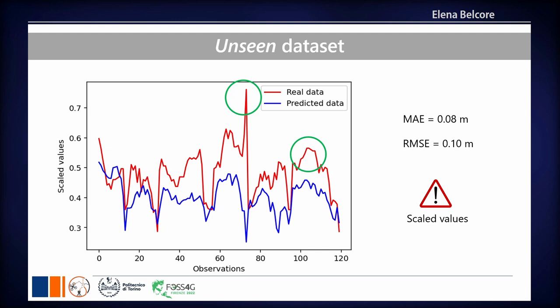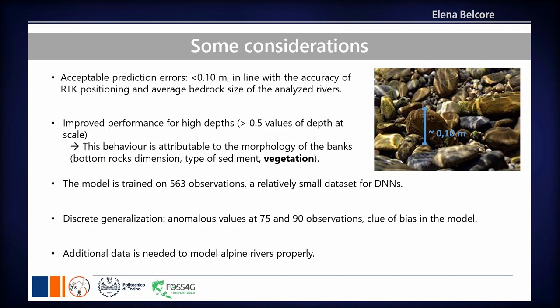On the unseen dataset we have an RMSE of 10 centimeters and a mean absolute error of 8 centimeters. These values are acceptable for this type of water body: they are in line with RTK measurements that have accuracy and precision around 3 centimeters, and also because of the nature of the alpine environment we are surveying. Most patterns in the river bottom are on the order of centimeters, so obtaining accuracy smaller than this has limited practical meaning.